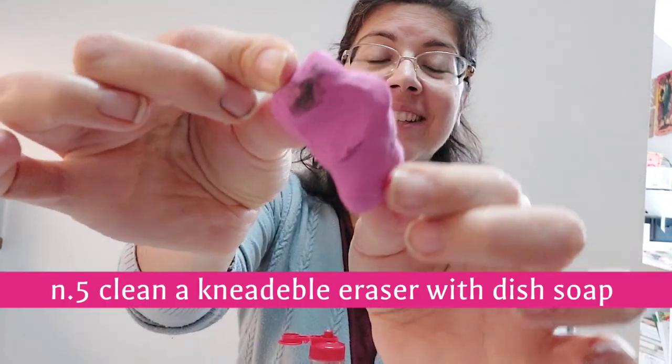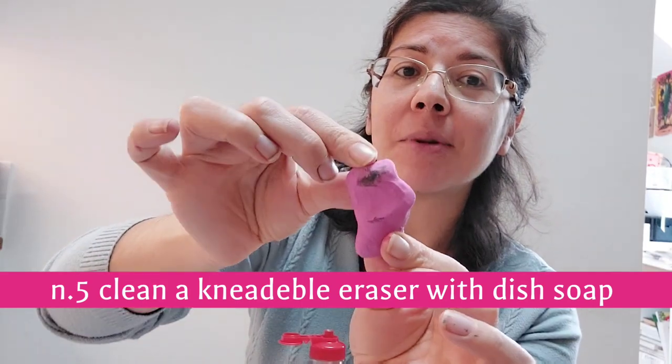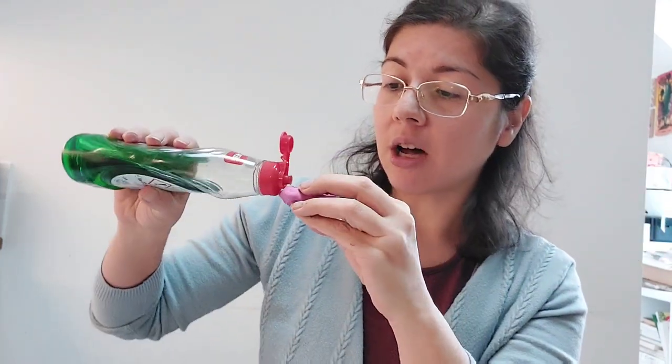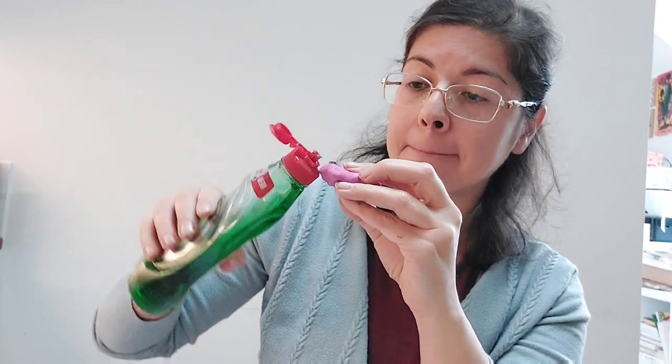The next art hack, before going back to our paint, we need a kneadable eraser that is dirty. So if you have a clean kneadable eraser, good for you, keep it that way. But if you have a dirty one, this may be the hack for you. So apparently you just need a little bit of dish soap, place it on the kneadable eraser and work it and it should go away, the dirt. Well, I'm definitely spreading the dirt. So I'm gonna put some more and I need a bowl of water.